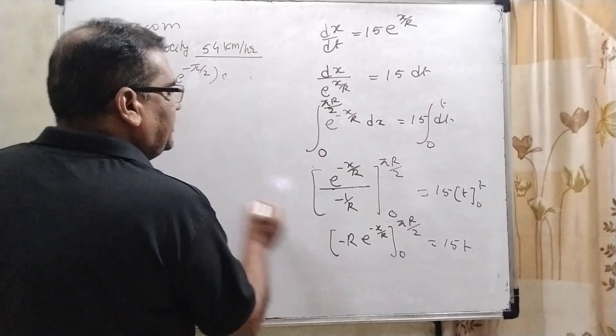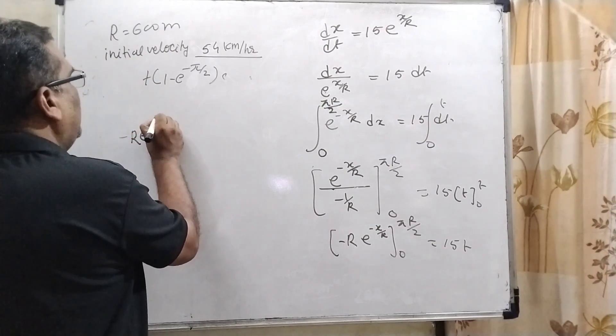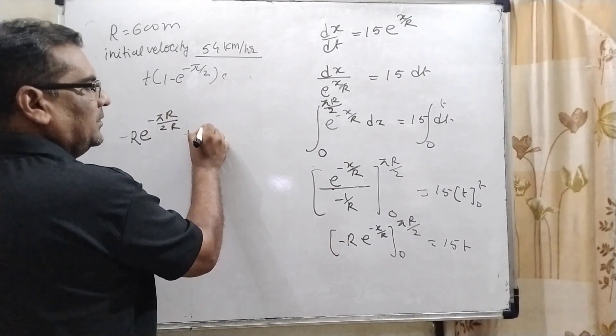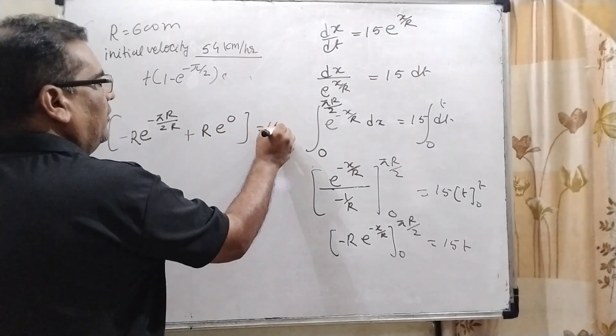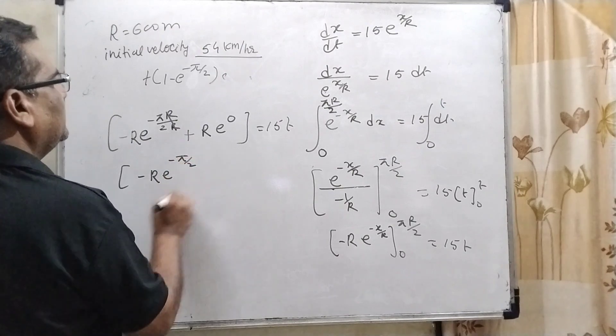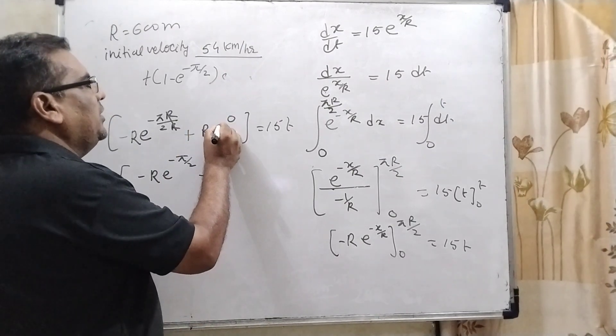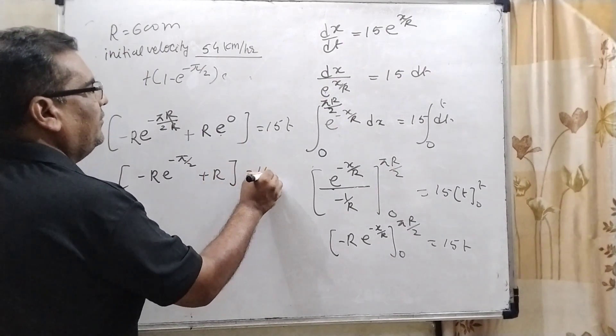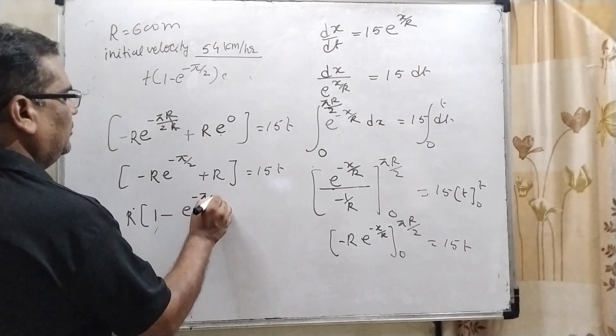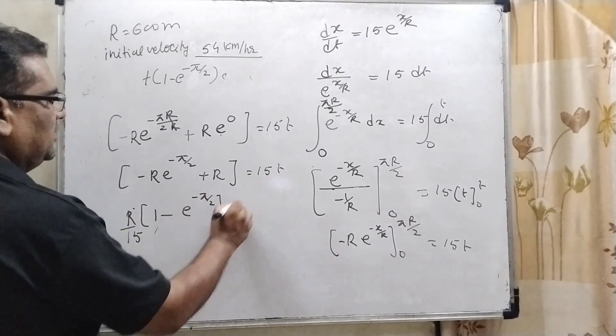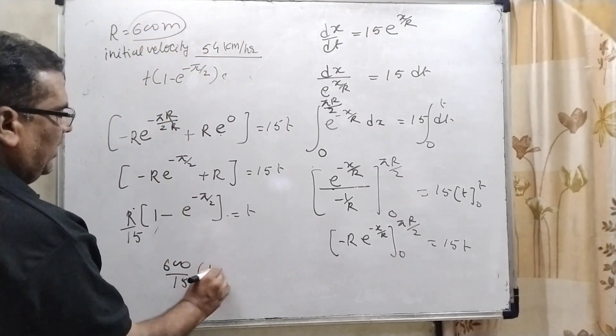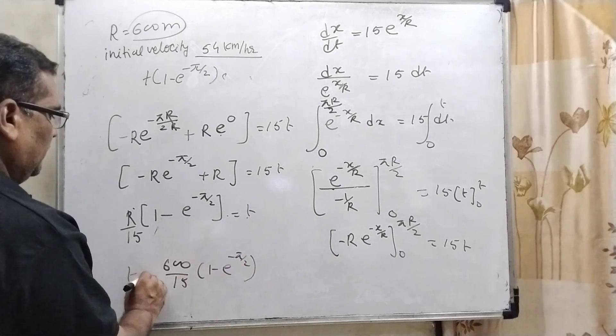Putting the upper limit: -r·e^(-πr/2r) minus (minus r·e^0) = 15t. Here r cancels out: -r·e^(-π/2) + r·e^0 = 15t. By exponent rule, e^0 = 1, so 15t = r(1 - e^(-π/2)). Transposing 15, t = (r/15)(1 - e^(-π/2)). Given that r = 600 meters, so t = (600/15)(1 - e^(-π/2)).